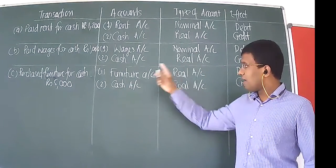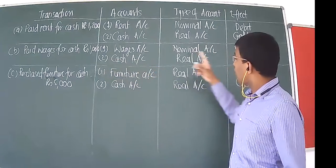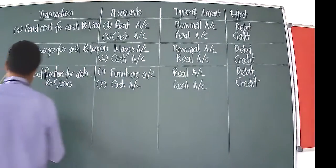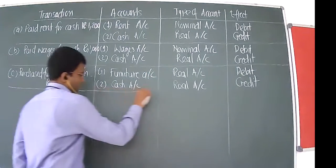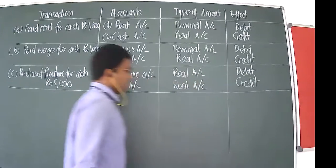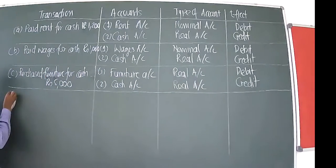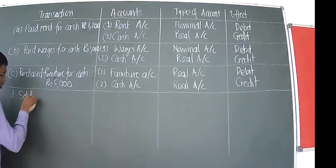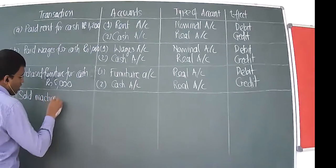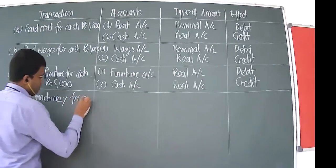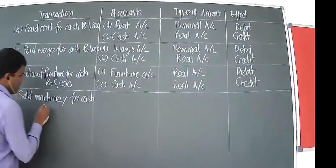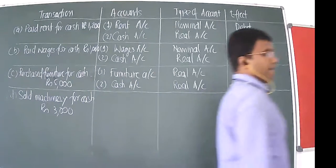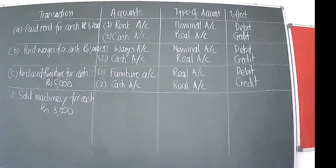Notice how simple it is — one transaction, two accounts involved, we identify the types and then the effect. The next transaction is: sold machinery for cash, rupees 3000. Remember the dual aspect of accounting — every transaction has two effects, so there are two accounts involved.